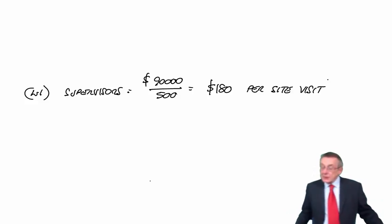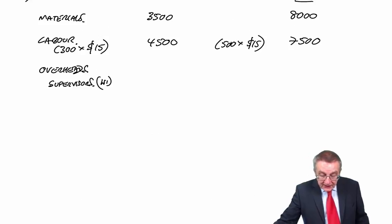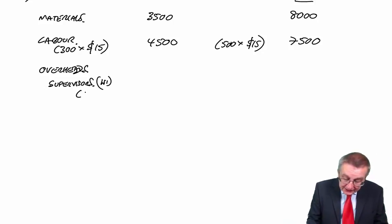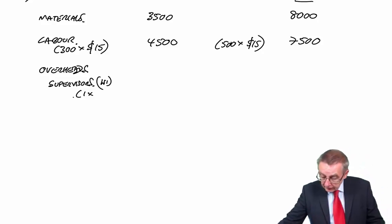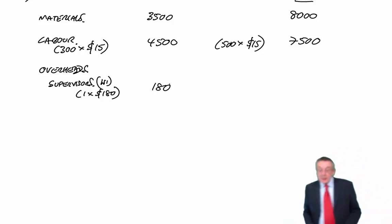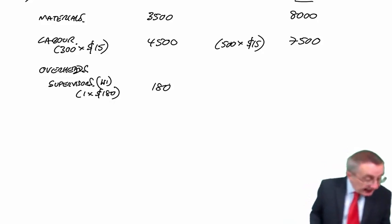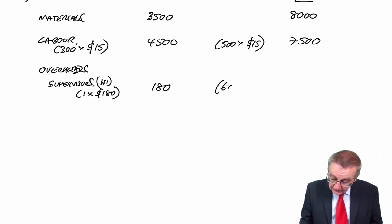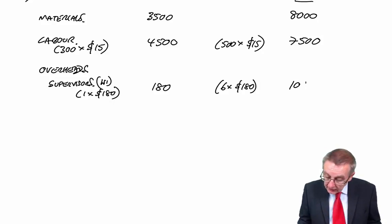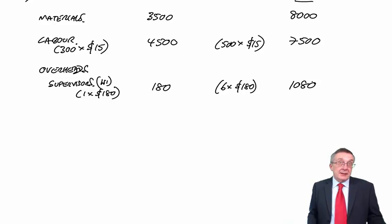Now we can go back to our costings, because we know that a GC takes one site visit, $180. So we charge $180 to a GC, whereas an EX requires six site visits, so each EX will be charged with $1,080. Basically the same approach for each of them.